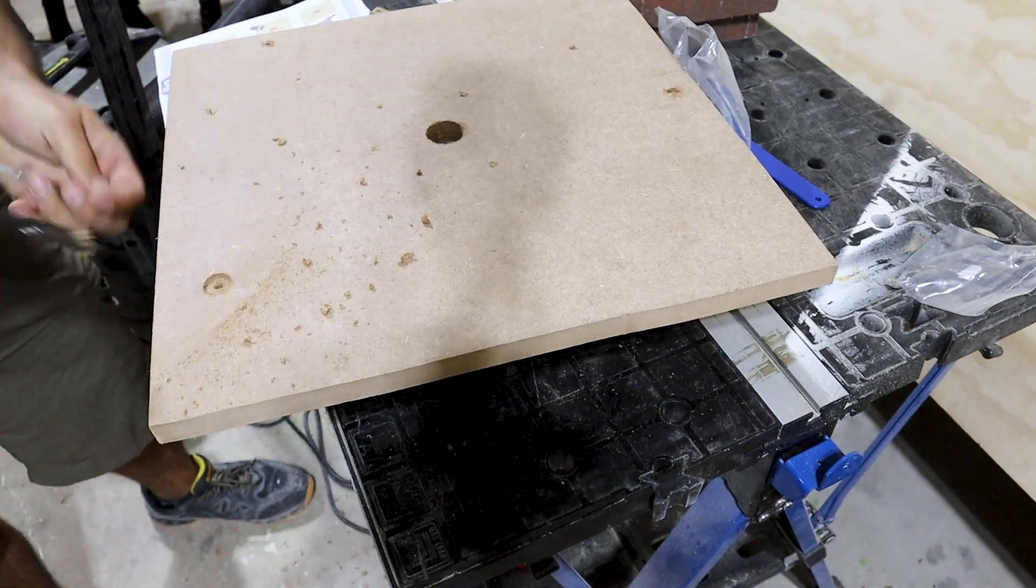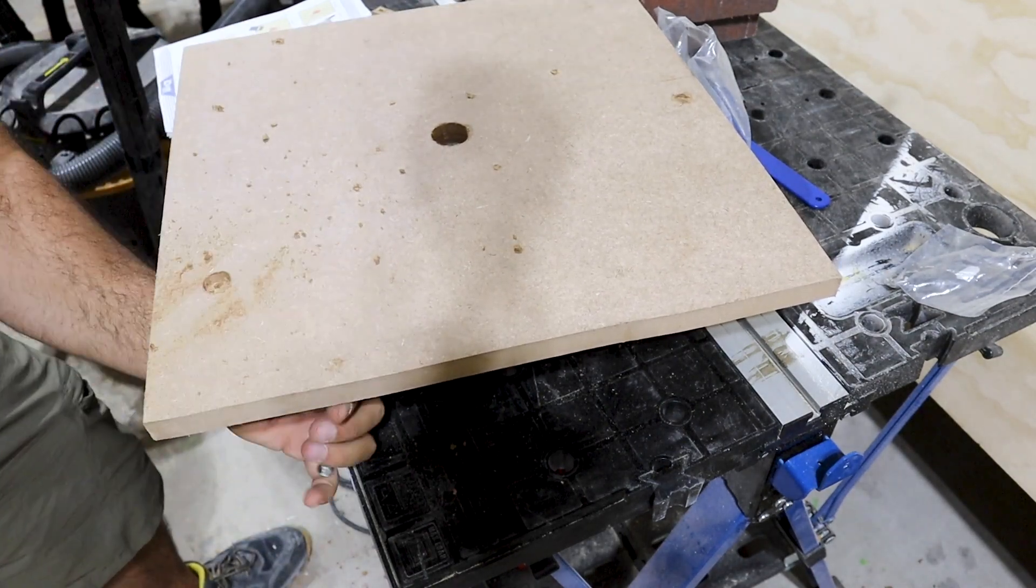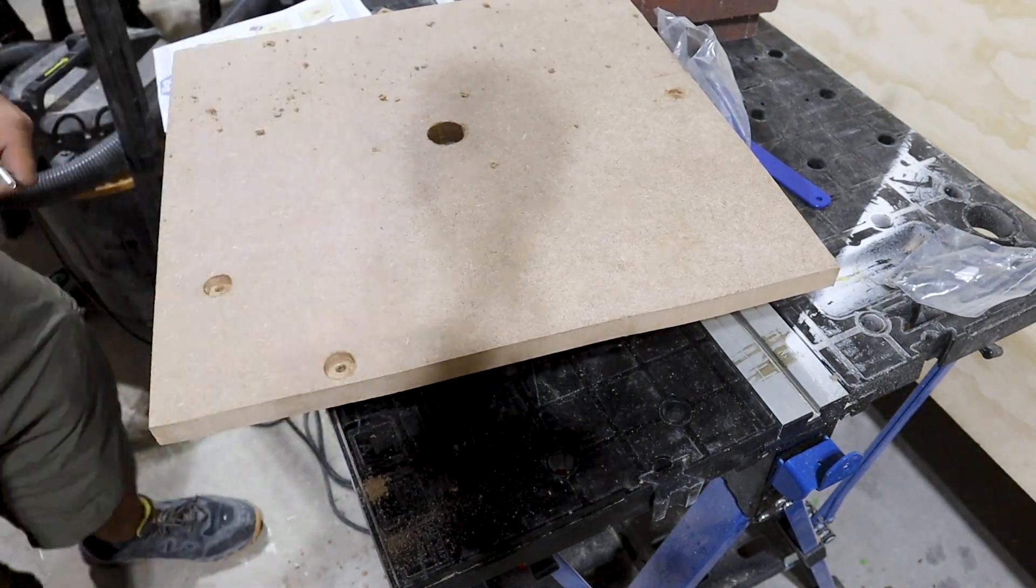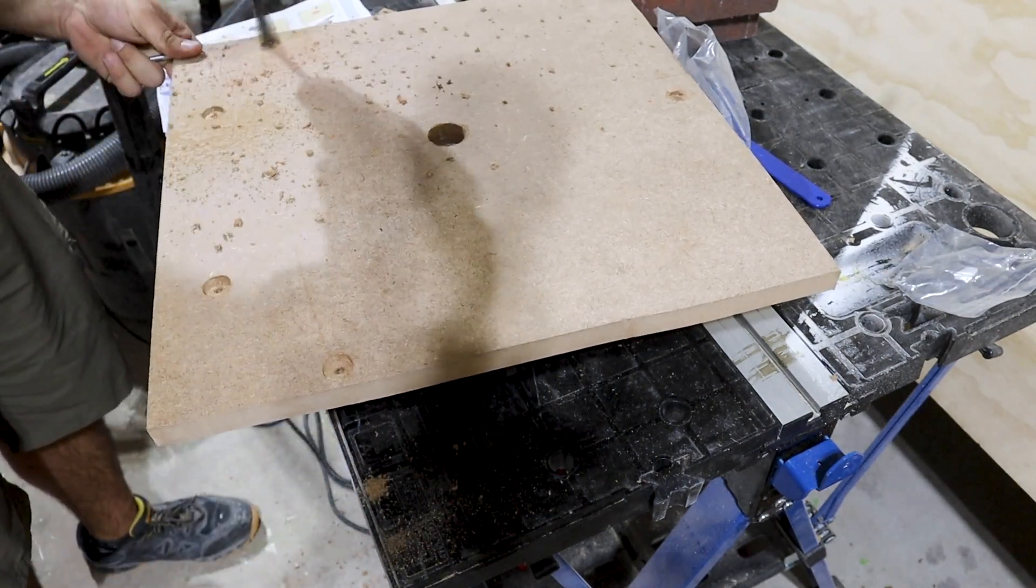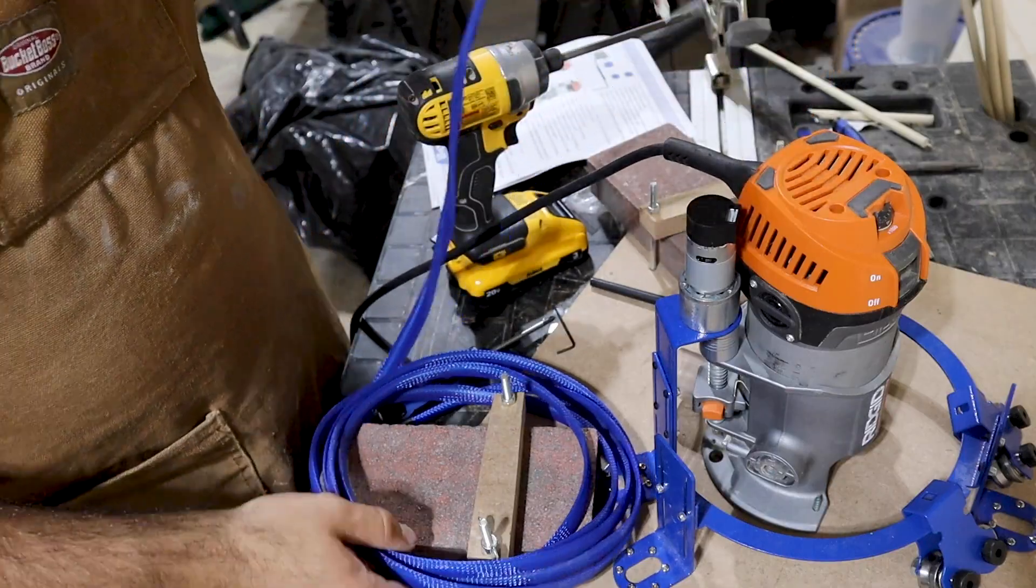For the bolts that go through the bottom face of the sled, I made sure to countersink them so that the ends wouldn't protrude and the sled would sit flat against the plywood sheets. And then we are all done making the final sled. In the next video, I'm going to go over all the cable connections and calibrating for the machine. So make sure you subscribe and follow along the Maker Made build. Thanks as always for watching guys.